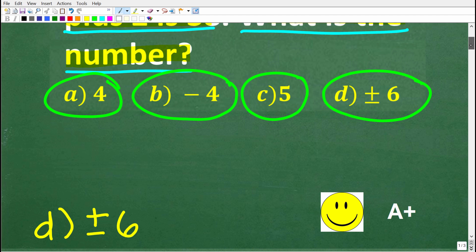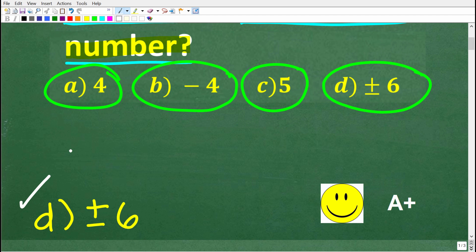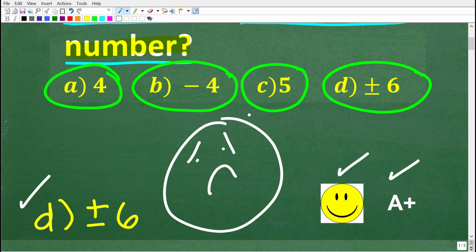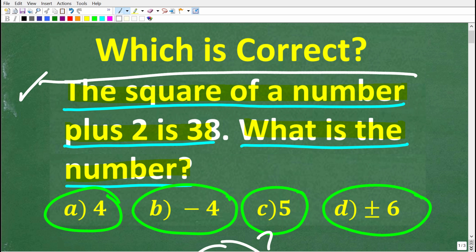The correct solution here is D, which is both positive and negative 6. So there's actually two numbers here that are the solution. Now if you got this right, you'll definitely get a happy face and an A plus. What we're talking about is something called translating a verbal phrase into an algebraic phrase or an equation. This is really important stuff in algebra. Make sure you take notes because this is really, really important.